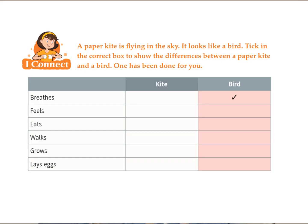In your course book, on the very first page of the second chapter, you can see at the top — that is the 'I Connect' activity. The same activity is shown in the video also. You can see in the screen there are two actions listed: breathe, feel, eat, walk, grow, lay eggs. On the right-hand side, there are two columns — one for kite and one for bird. The first one is done as a sample for you. Kite cannot breathe, whereas birds can breathe, so they have put a tick mark there. Similarly, you have to do for the other things.